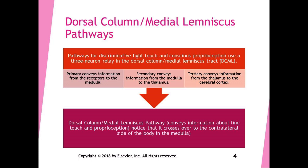The DCML pathway carries discriminative light touch and conscious proprioception using a three-neuron relay. The primary neuron conveys information from the receptors to the medulla — the pseudo-unipolar neuron has two axons, one peripheral receptor axon and one going from the dorsal root ganglion to the medulla. The secondary neuron goes from the medulla to the thalamus. The tertiary neuron conveys information from the thalamus to the cerebral cortex. The pathway crosses over to the contralateral side in the medulla.